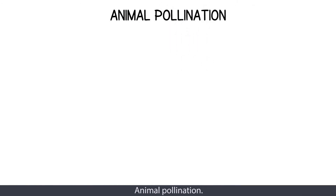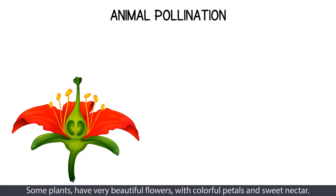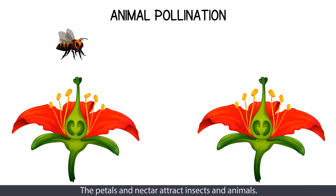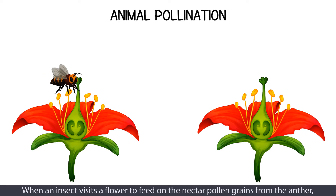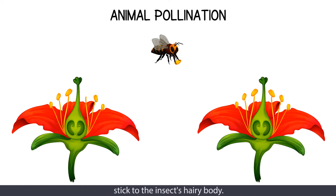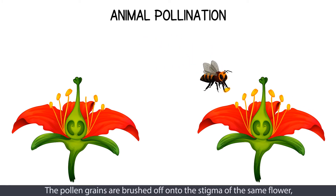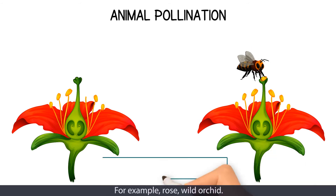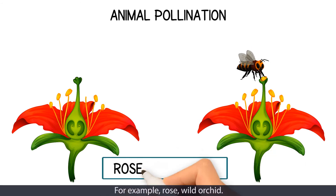Animal pollination. Some plants have very beautiful flowers with colorful petals and sweet nectar. The petals and nectar attract insects and animals. When an insect visits a flower to feed on the nectar, pollen grains from the anther stick to the insect's hairy body. The pollen grains are brushed off onto the stigma of the same flower or another flower that the insect visits. For example, rose, wild orchid.